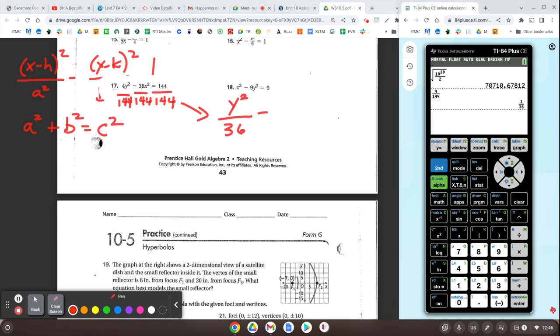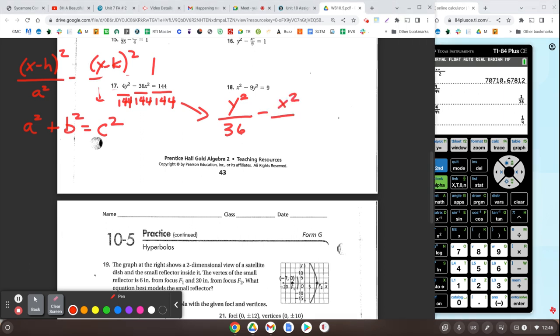So now that's going to be, I'll carry this on right over here, y squared over 36 minus. Now let's figure out what 36 over 144 is. Alpha y equals enter, 36 on top, 144 on bottom. And you get... So that's going to be minus x squared over 4 equals 1.